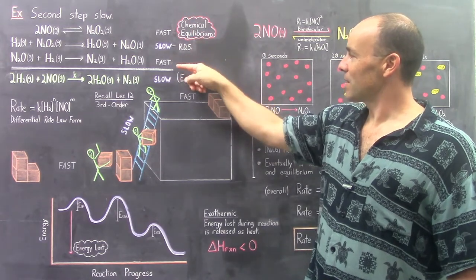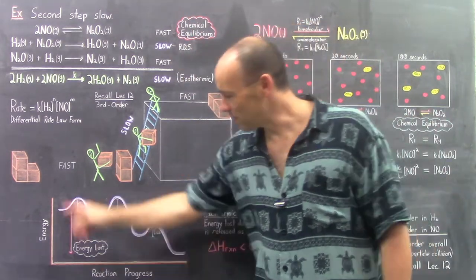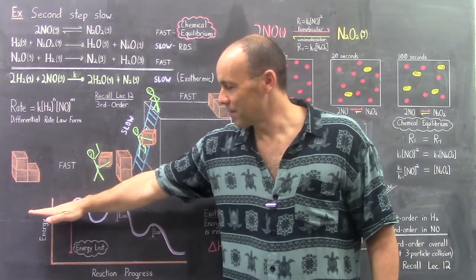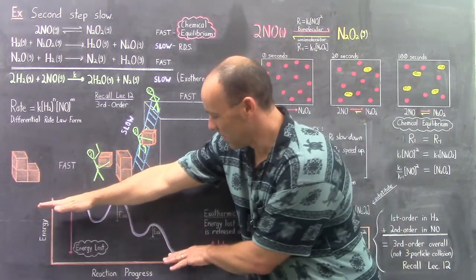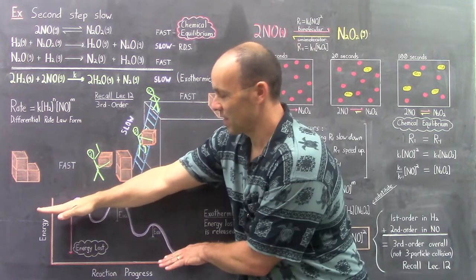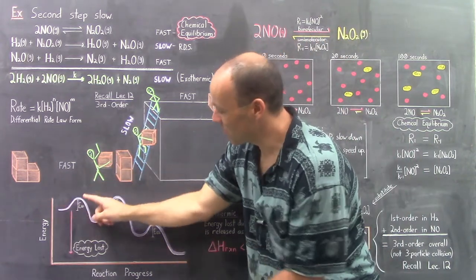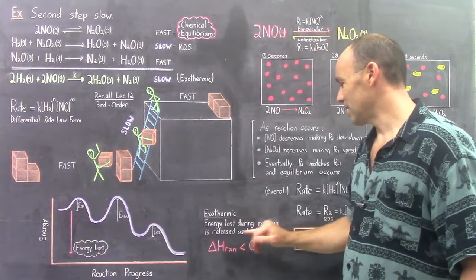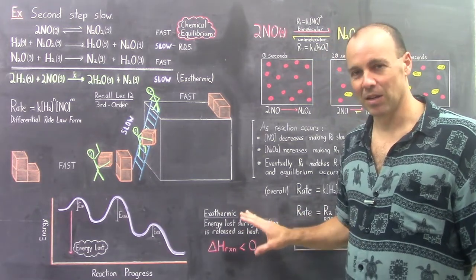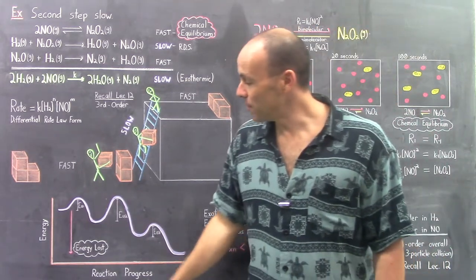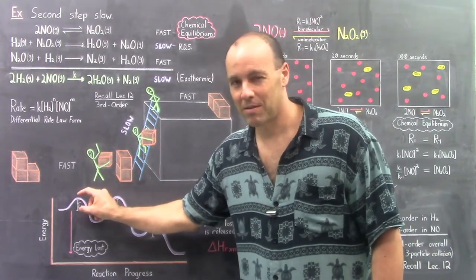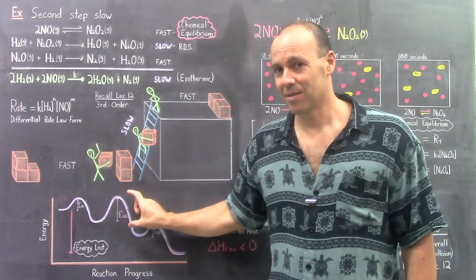The mechanism can also be visualized in the reaction profile, which plots the energy of the chemicals versus reaction progress. The overall reactants have a certain energy, and since this is an exothermic reaction, the products have less energy — that energy is released as heat, so the enthalpy change is negative. You can see in the profile that this is a three-step mechanism, and by looking at the energy barriers, the second barrier is the largest — so that is the slow step.